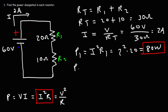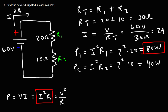To calculate the power dissipated by the second resistor, it's going to be the square of the current times R2. So it's 2 squared times 10 — that's 4 times 10 — meaning the second resistor is dissipating 40 watts.